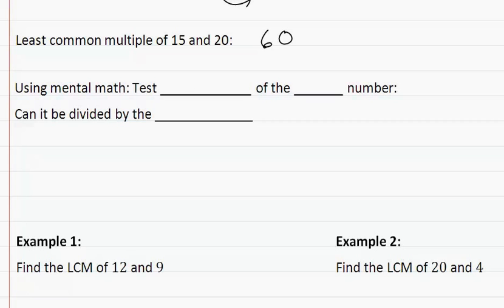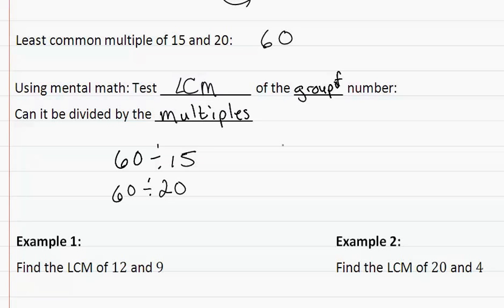Now using mental math, we have a test for the LCM of a group of numbers. Can it be divided by the multiples? So what we are saying is, can 60 be divided by 15? Can 60 be divided by 20? If the answer is yes, then we know that we have the LCM, maybe not necessarily the lowest common one, but we do have a common multiple.